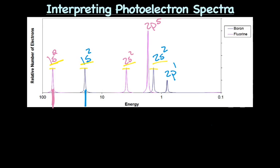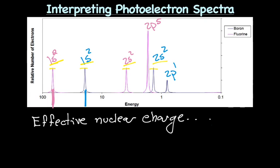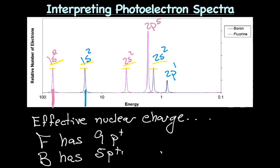It has to do with effective nuclear charge. Fluorine has how many protons? Nine protons. Boron has how many protons? Five protons. So the fluorine nucleus is just stronger. It's just stronger. There is more protons holding those electrons, and so removing each electron is going to be more difficult. It's going to take more energy from a fluorine atom than from a boron atom.